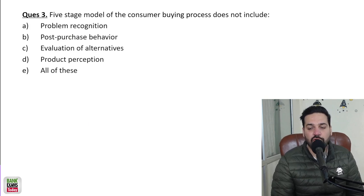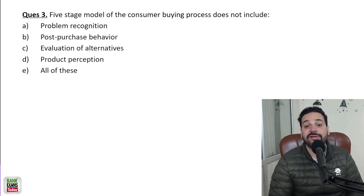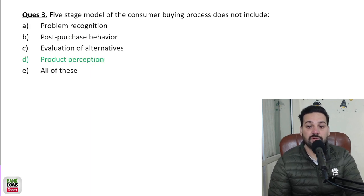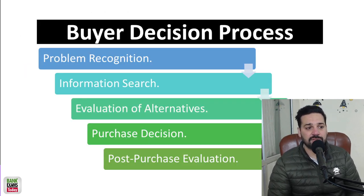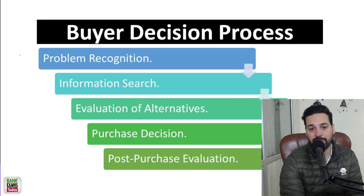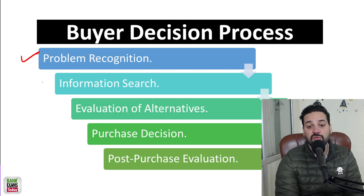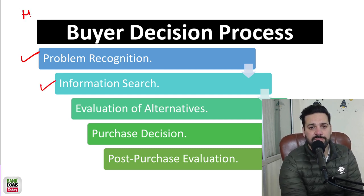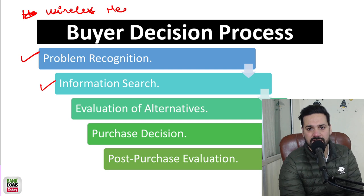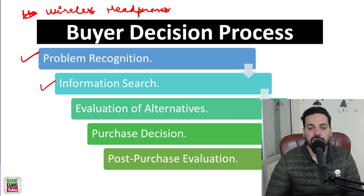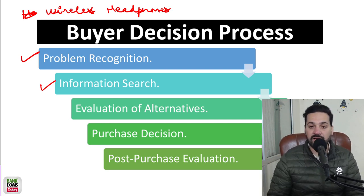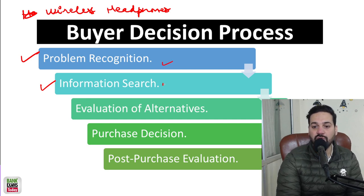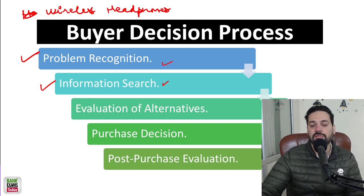The five-stage model of the consumer buying process — you need to know product decision process. First, you recognize the problem. Whatever the problem is, then you search for information. Let's assume you want to purchase wireless headphones. You right now have wired headphones but you need wireless ones — you recognize the problem. Then you went to the internet or some stores and you got the information.